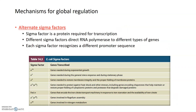The last mechanism for global regulation specific to bacteria is the use of alternate sigma factors. The sigma factor is a protein that binds to RNA polymerase and is required for transcription in bacteria. Different sigma factors can direct RNA polymerase to different types of genes because each sigma factor recognizes a different promoter sequence. Depending on the sigma factor used, different sets of genes can be transcribed. For example, there is a list of E. coli sigma factors and the genes targeted for transcription when they are bound to RNA polymerase.